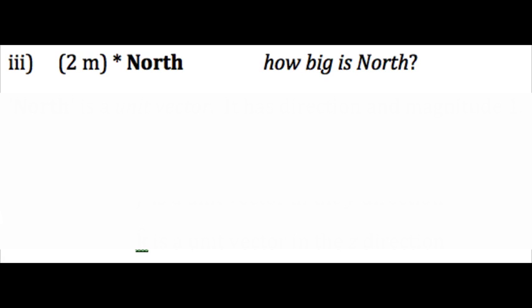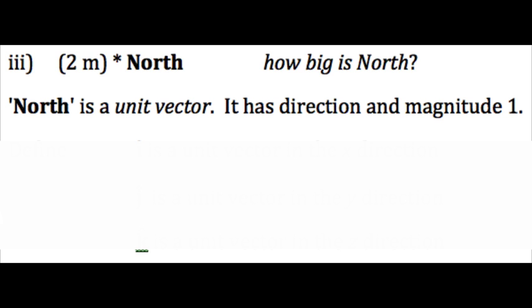Well, the magnitude of the whole vector is 2 meters. So the magnitude of north must be 1. Not 1 meter, just 1. So north is an example of a unit vector in the positive direction of north.